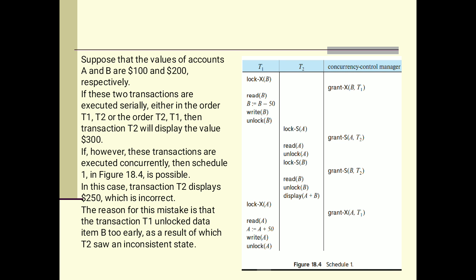Now, suppose that the values of accounts A and B are 100 dollars and 200 dollars respectively. In A account we have 100 dollars and in B account we have 200 dollars. If these two transactions are executed serially, either in order T1, T2, or in order T2, T1, then transaction T2 will display the value as dollar 300, that is, the addition of account A and account B.